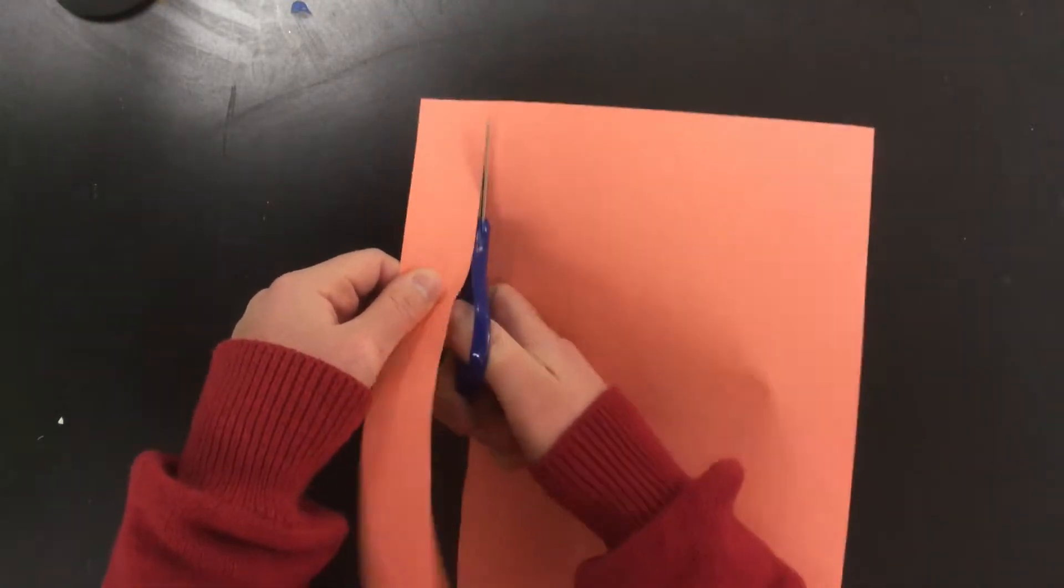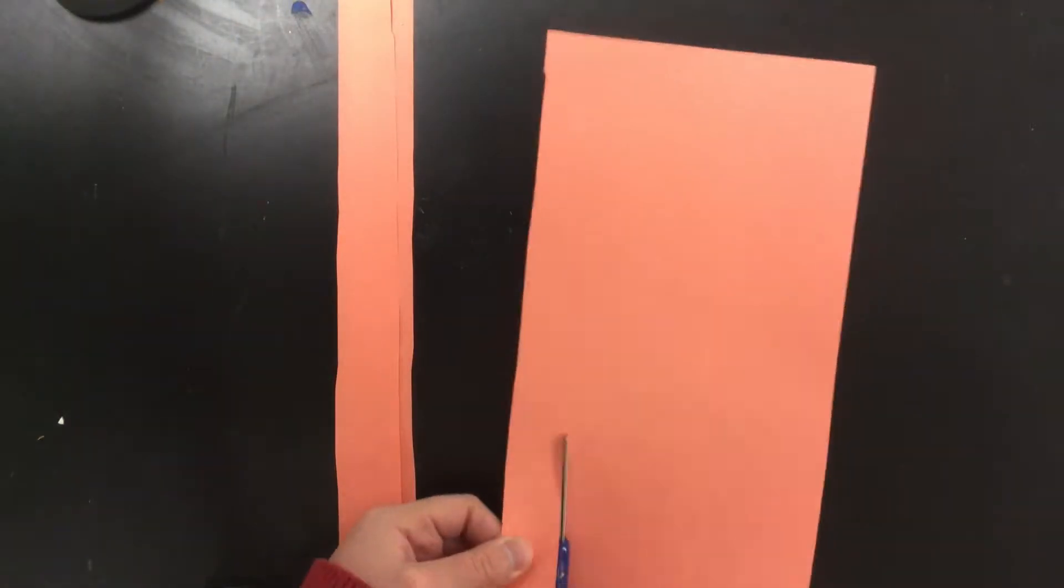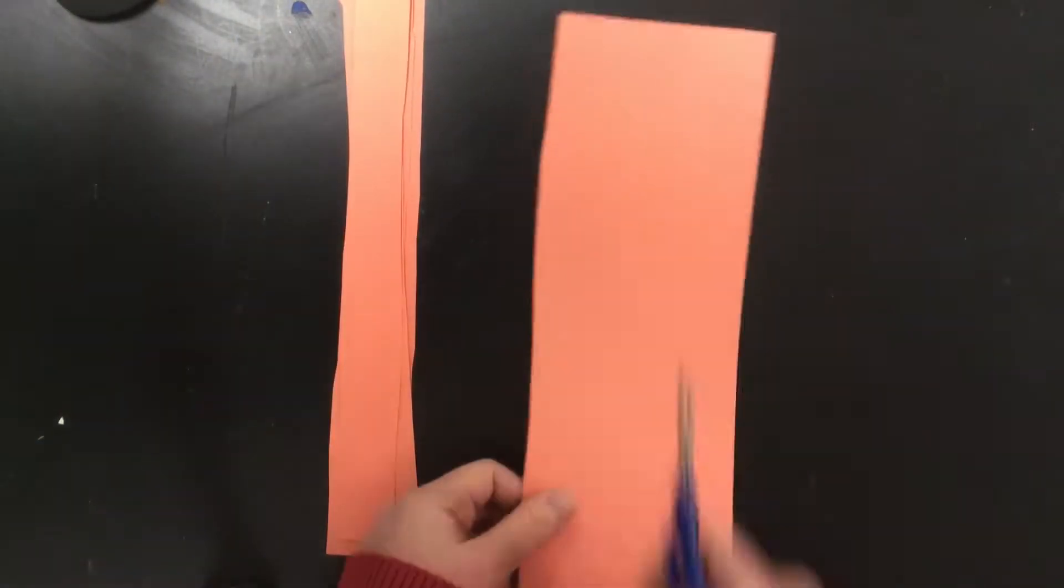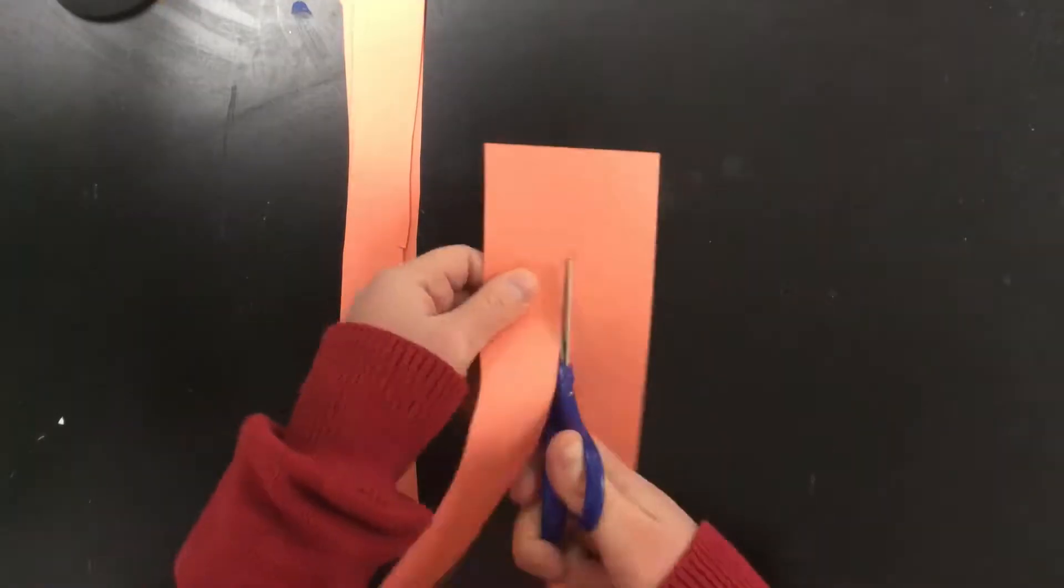If the strips are any thinner the project's going to be a lot harder and if they're any bigger you won't have enough strips. So about as big as two fingers put together, that's good.